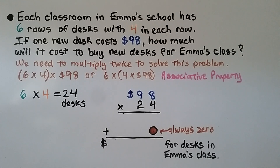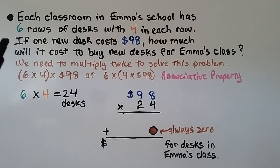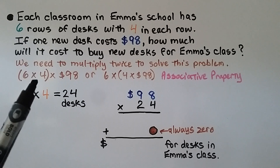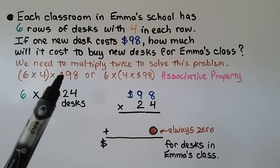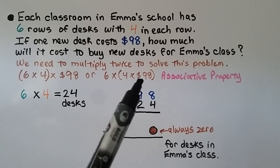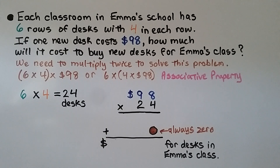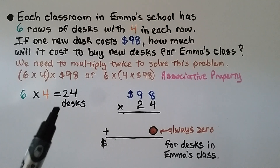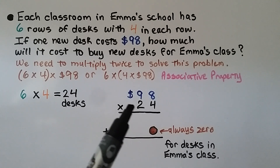Each classroom in Emma's school has 6 rows of desks with 4 in each row. If 1 new desk costs $98, how much will it cost to buy new desks for Emma's class? We need to multiply twice. First find how many desks: 6 times 4 equals 24 desks. Then multiply that by $98 per desk. We can also multiply 4 times $98 first, then multiply by 6, because the associative property states we can group and multiply factors differently and get the same product.